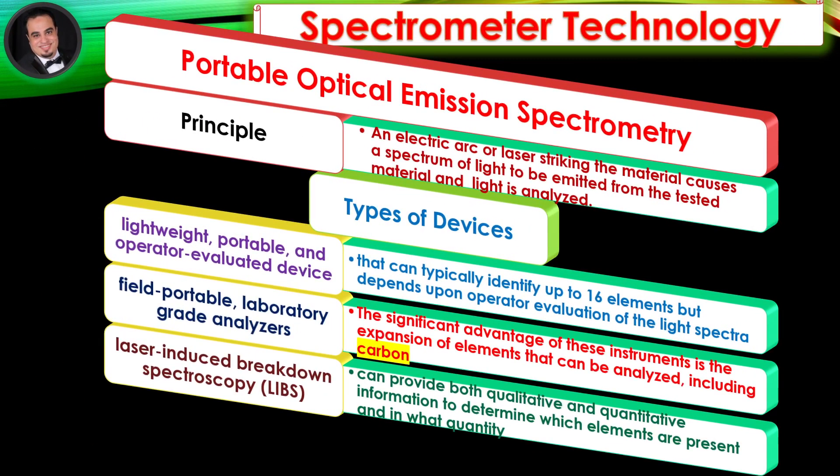Portable Optical Emission Spectrometry. Principle: An electric arc or laser striking the material causes a spectrum of light to be emitted from the tested material, and the light is analyzed.